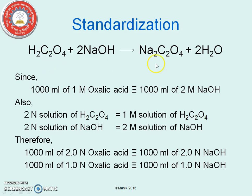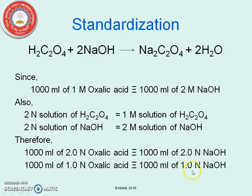Standardization — normal solution approach. From the same reaction, 1000 ml of 1 molar oxalic acid is equivalent to 1000 ml of 2 molar sodium hydroxide. Since 2 normal oxalic acid equals 1 molar oxalic acid, and 2 normal NaOH equals 2 molar NaOH, we can say 1000 ml of 2 normal oxalic acid is equivalent to 1000 ml of 2 normal NaOH. In other words, 1000 ml of 1 normal oxalic acid is equivalent to 1000 ml of 1 normal NaOH solution.